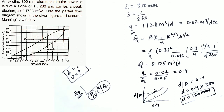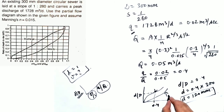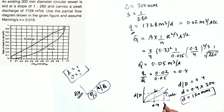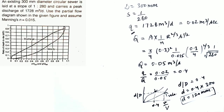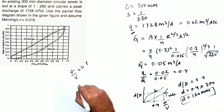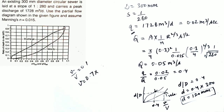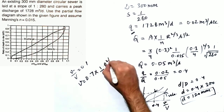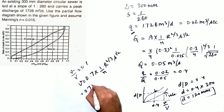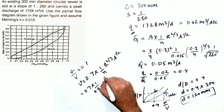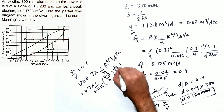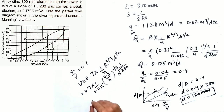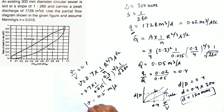To find velocity: from the graph, using d/D = 0.4, extend the line to the velocity curve to find v/V = 0.7. Capital V = (1/n) × R^(2/3) × S^(1/2) = (1/0.015) × (0.3/4)^(2/3) × (1/280)^(1/2). So small v = 0.7 × V = 0.5 m/s. This is the velocity at partial depth.